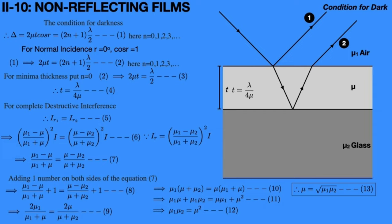Now if you take mu1 equals 1 for air and mu2 equals 1.5 for glass, then from this equation the refractive index of the transparent material is 1.38. That means magnesium fluoride, MgF2, has a refractive index which is exactly equal to 1.38. Hence, if you coat the glass material with magnesium fluoride with thickness t equals lambda by 4 mu, then it will act as a non-reflecting film.